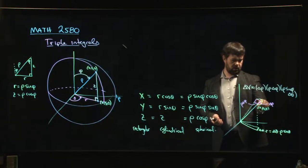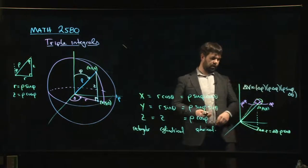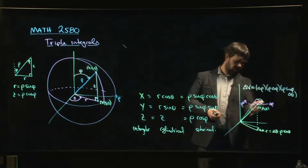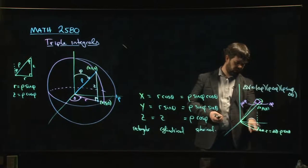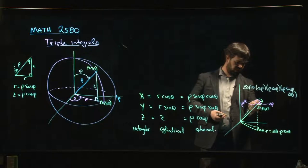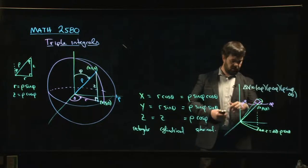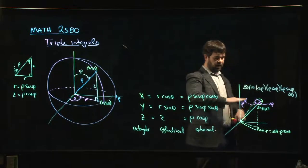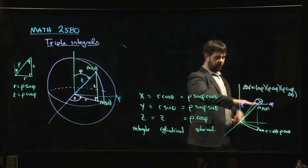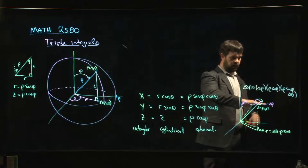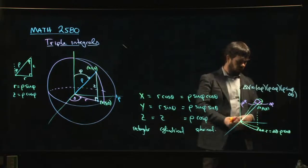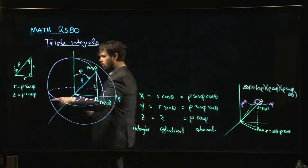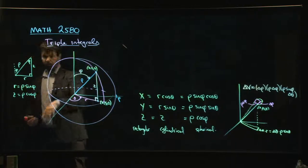This arc here comes from varying theta, right? The length of the arc, you can kind of think down here that the length of that arc comes from, well, you're varying theta, but you're varying theta in a plane which is parallel to the x, y plane, and the distance out that way is not rho but r, the polar r.